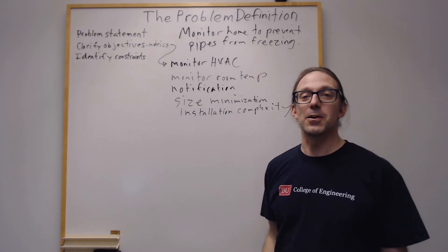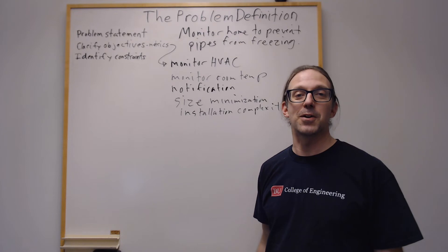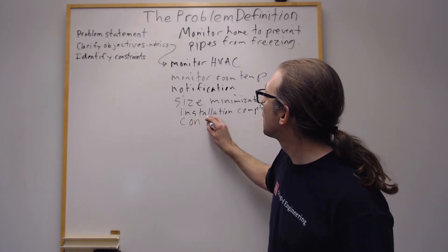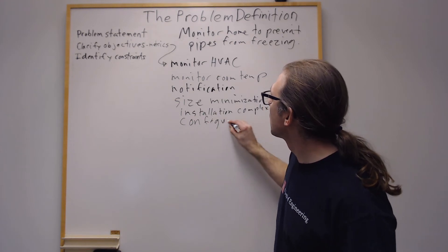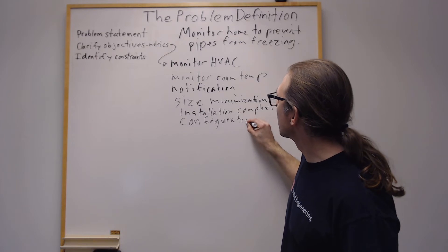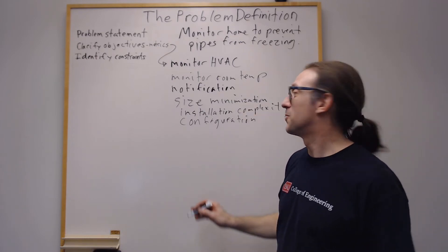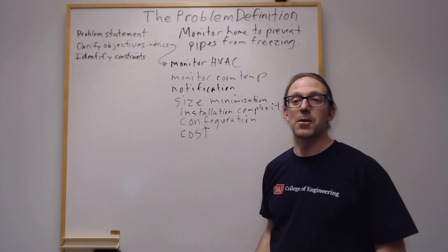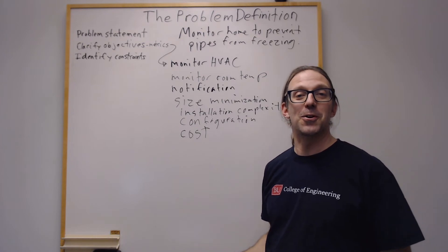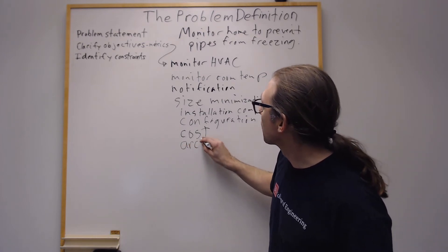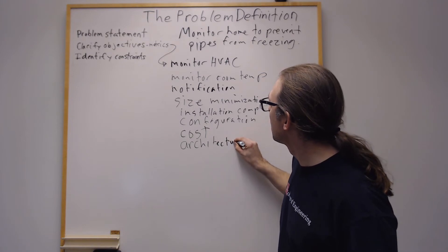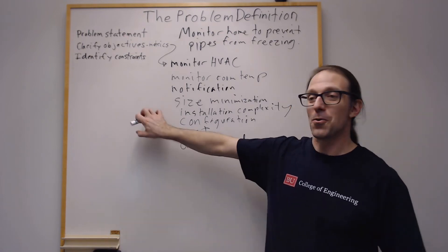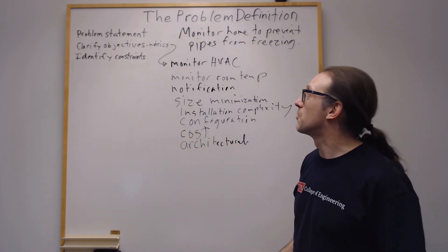You can call it complexity. And then it could be configurational ease. Like if this is notifying someone, is it using a text message? Is it an internet of things type of thing? Configuration. And then cost is an objective we have to meet, right? If we want to make this a viable product. And then maybe there's an architectural component to it. Like does it look good? Is the client going to be willing to live with it? If it's mounted on the wall of their house, will it look good?